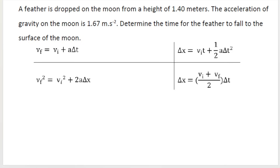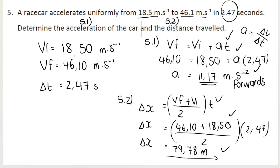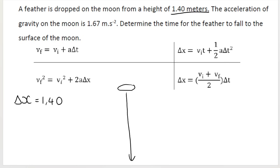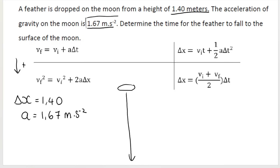Our next question involves a feather being dropped on the moon from a height of 1.4 meters. The feather falls a displacement of 1.4 meters downward. Choosing down as positive, displacement is positive 1.4 m. The acceleration of gravity on the moon is 1.67 meters per second squared downward, so acceleration is 1.67 m/s². For reference, gravitational acceleration on Earth is 9.8 m/s² — much greater than on the moon.